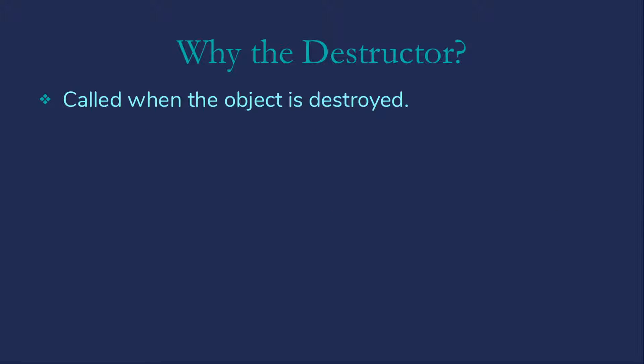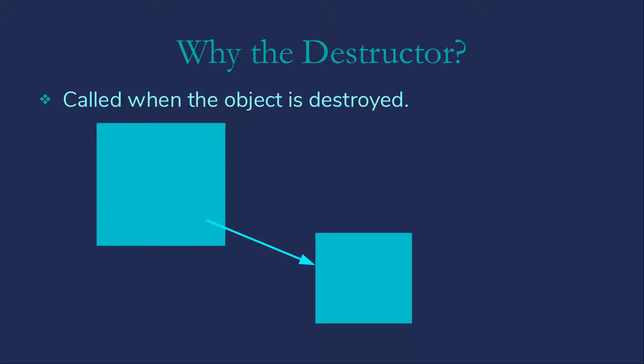With a correctly written destructor, when the object is deleted, the destructor will be called and first delete the dynamically allocated memory, and then the object itself will actually be deleted.